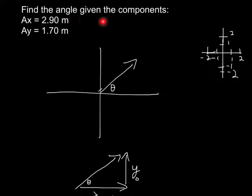In this question they say, find the angle given the components Ax equals 2.9 meters, Ay equals 1.7 meters.